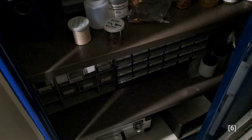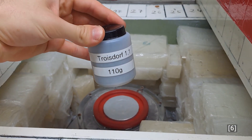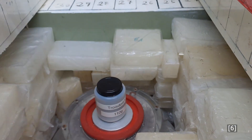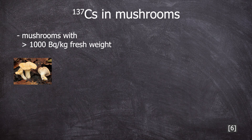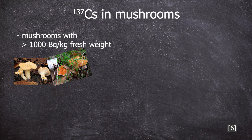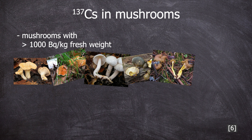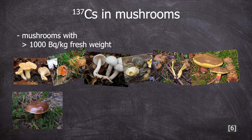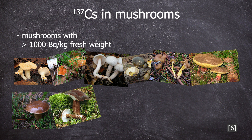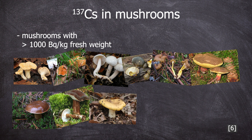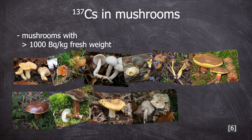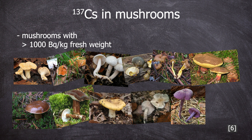Some mushrooms can exceed 1,000 becquerels per kilogram of fresh weight. Examples include: the hedgehog mushroom, the red-brown hedgehog mushroom, various species of waxycaps, the olive oysterling, the yellowstock chanterelle, common redfoot bolete, bay bolete, blackening milk cap, the ochre brittlegill, silky knight, violet funnel, and the goat liver.